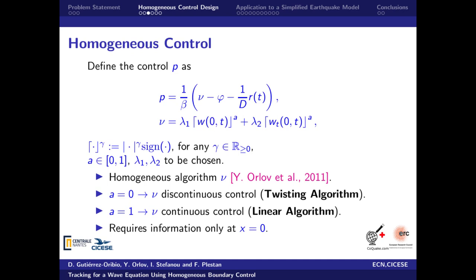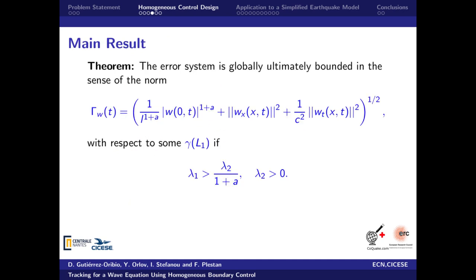The question now is how to select the control gains lambda 1 and lambda 2. We can answer this by looking at the main result of our study. Assuming the control gains are represented as shown, the error system is globally ultimately bounded in the sense of this norm with respect to some function depending on the bound of the second derivative of the reference.